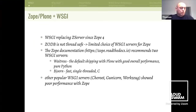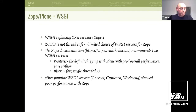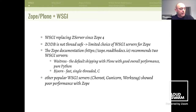Let me start with a short introduction to WSGI and its use in Zope and Plone. WSGI is the Python web server gateway interface and is specified in Python Enhancement Proposal 3,333. It's the standard interface between Python applications and a web server, and it's pretty old. It was created originally as PEP 333 in 2003, and then there was an update in 2010, mainly because of Python 3.